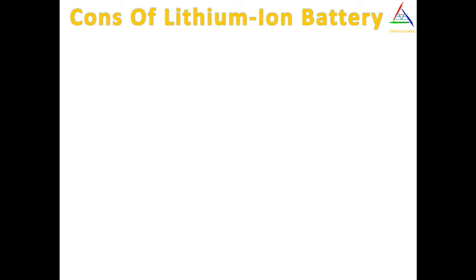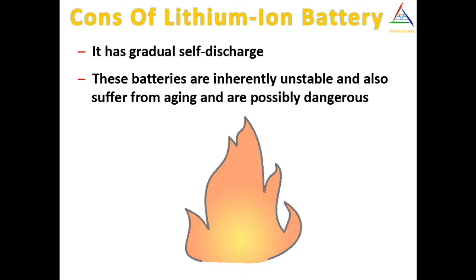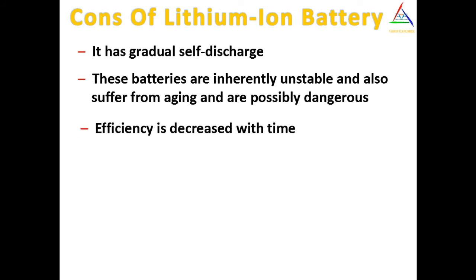Now let's talk about the cons of lithium ion battery. The first is it has gradual self-discharge, but this does not matter too much for phones which are always in use. The next is these batteries are inherently unstable, suffer from aging, and are possibly dangerous — if the barrier between the positive and negative electrode is ever violated, the chemical reaction can cause combustion. The next con is their efficiency decreases with time, and the last is the lithium ion battery is fragile and needs a protection circuit to maintain safer operations.